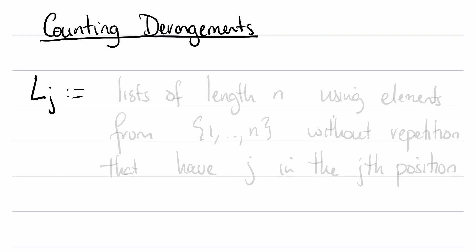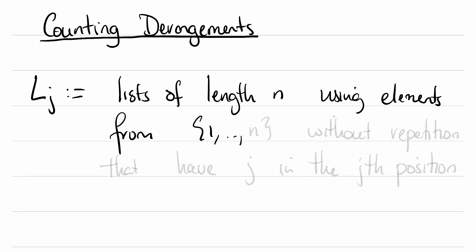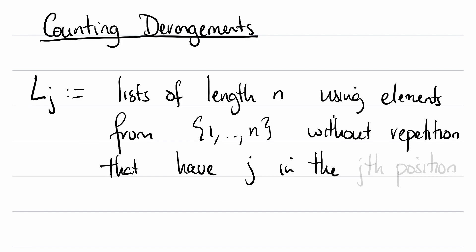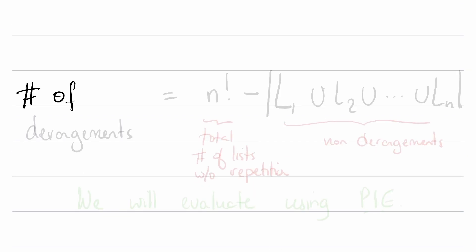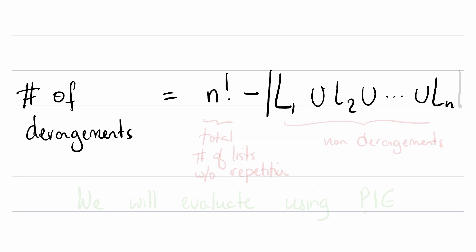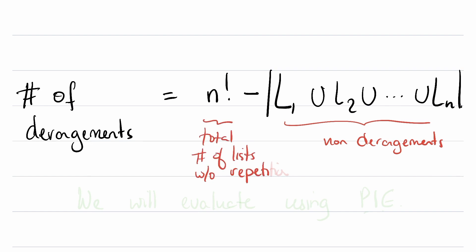We're going to define a set L_j to be the lists of length n using elements from the set of integers from 1 to n without repetition that have j in the jth position. Given that definition, the number of derangements is going to be the total number of lists — n factorial — minus the cardinality of L_1 union L_2 all the way up to L_n. That union is the collection of non-derangements, and n factorial is the total number of lists without repetition.